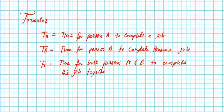In the problems we're going to be looking at today, I'll give you a scenario where you have the time that one person does a job, the time that a second person does a job, and you'll be asked to find how much time they would spend to do the same job if they worked together. Or I will give you the time that they spend finishing the job together, the time that one person spends doing that job working alone, and I'll ask you to find the time it takes the other person to do the job working alone.